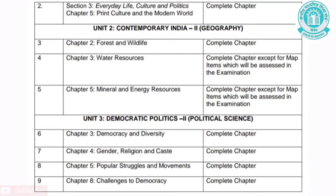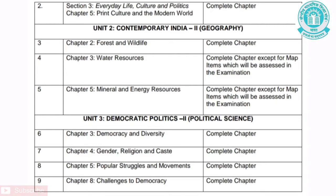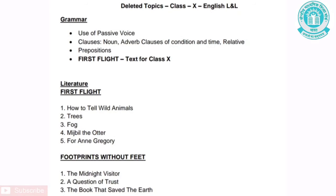Unit 3 is Democratic Politics 2 — Political Science. Under this unit, four chapters have been completely removed: Chapter 3, Democracy and Diversity; Chapter 4, Gender, Religion and Caste; Chapter 5, Popular Struggles and Movements; and Chapter 8, Challenges to Democracy.